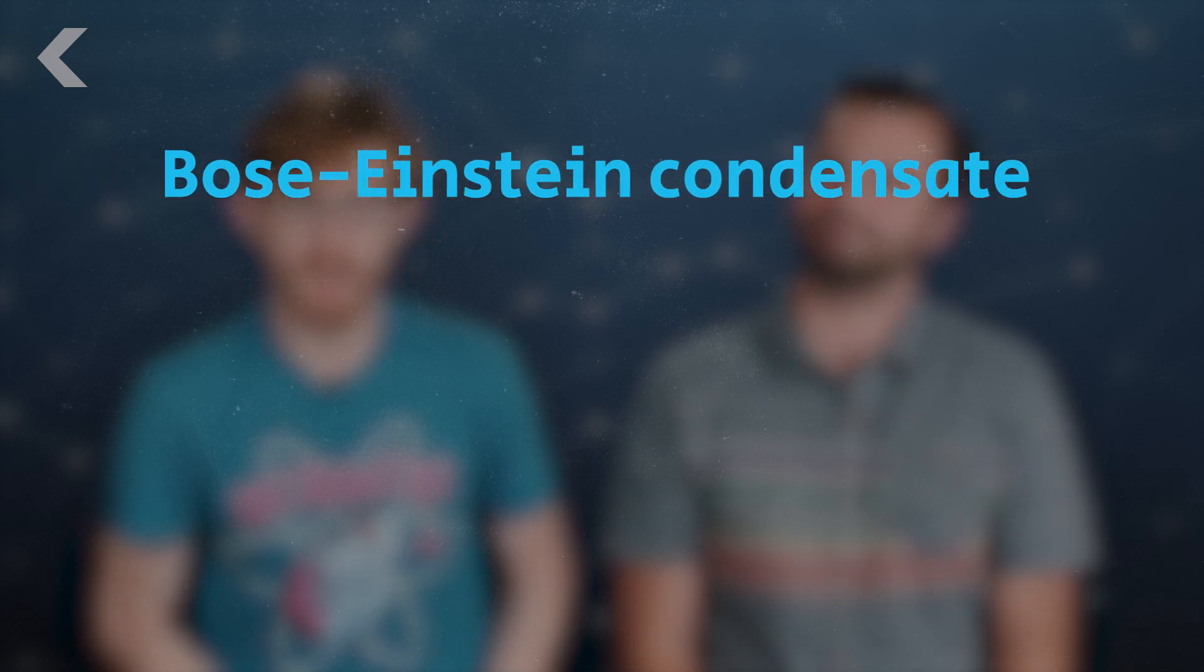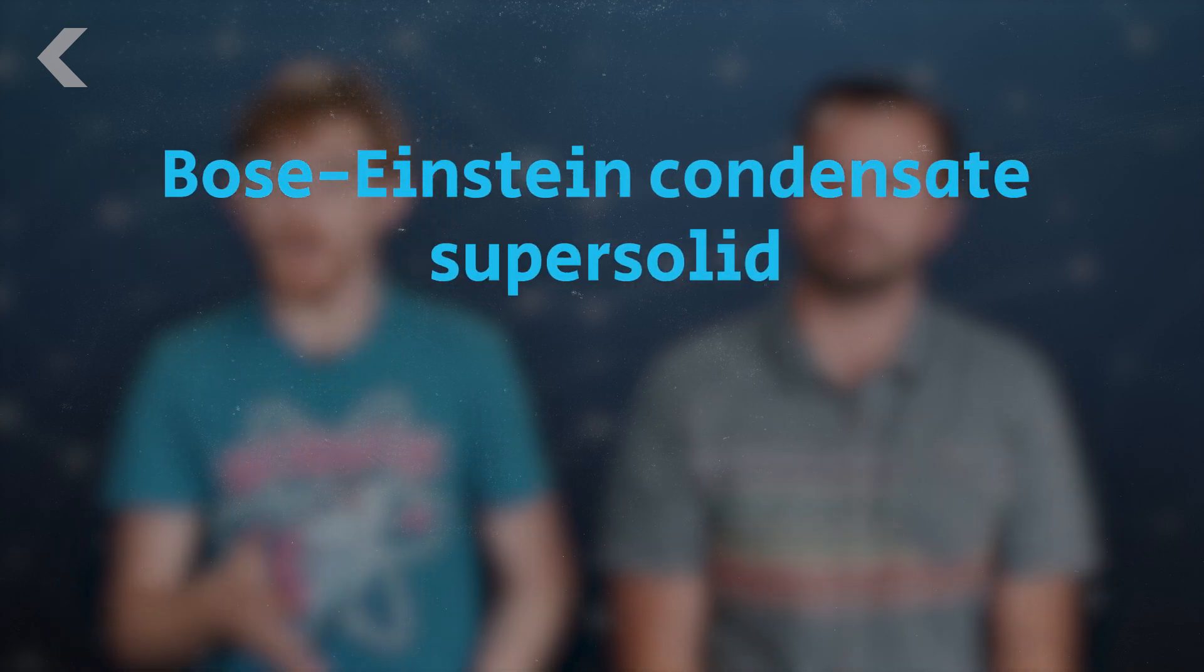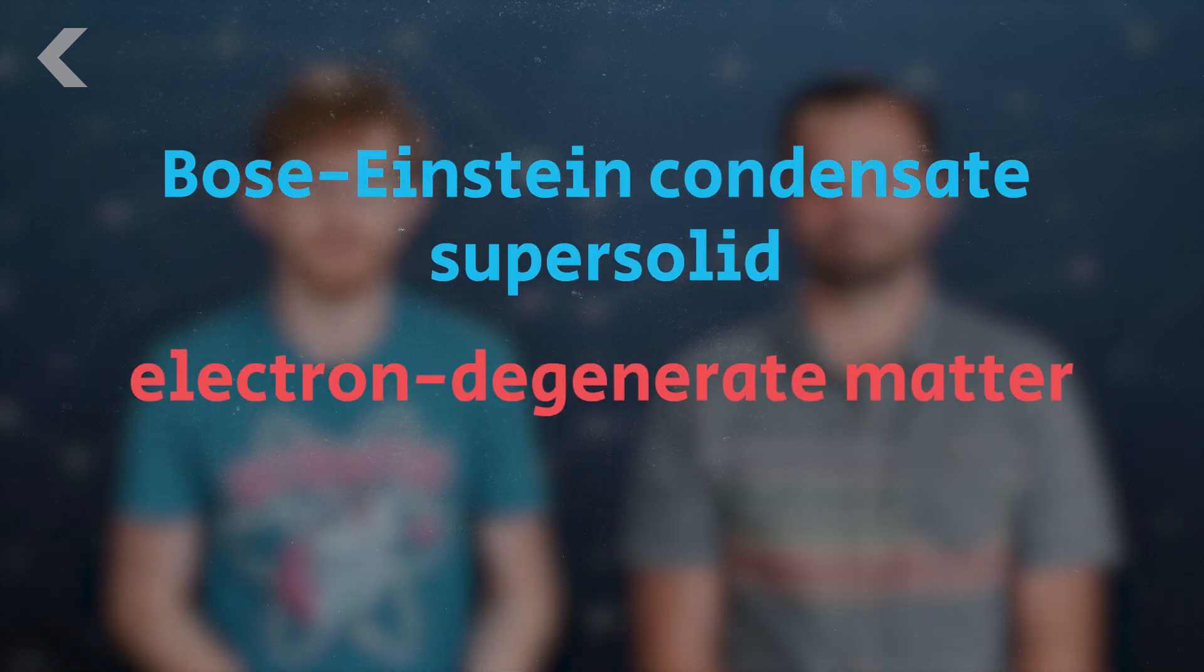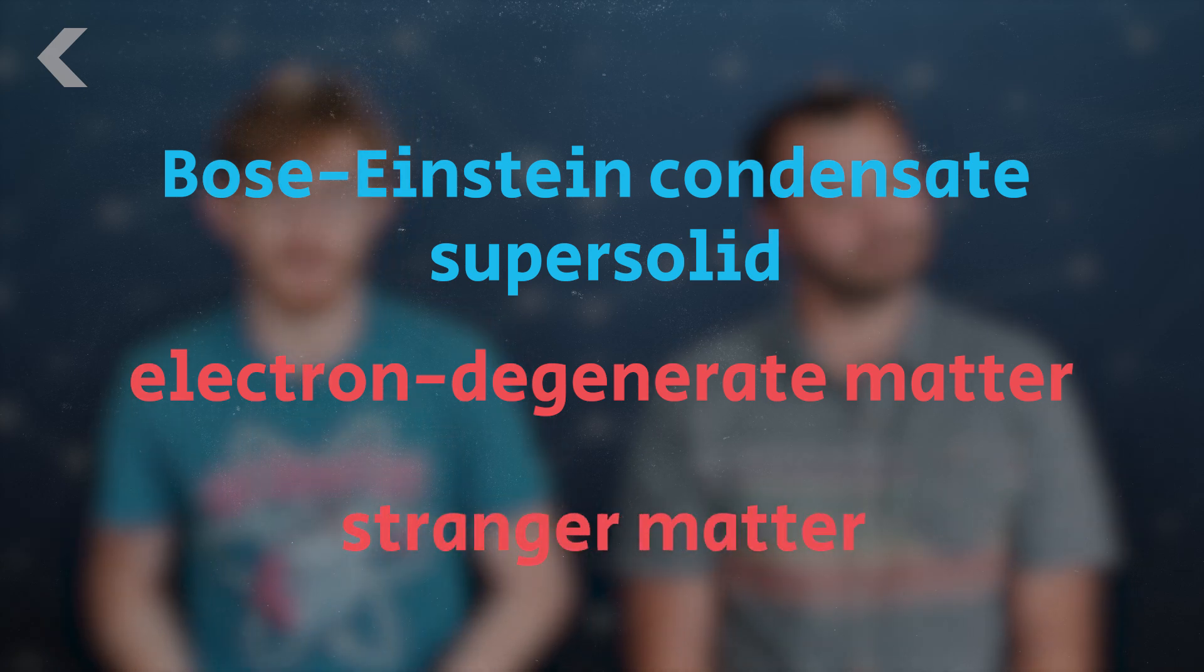But on top of those four, there are several more states of matter. Cold ones like the Bose-Einstein condensate and super solid, and hot ones like electron degenerate matter, free particles found in white dwarf stars, or the theorized stranger matter possibly found in neutron stars. Plus, of course, time crystals, which have low energy states and weird effects across time symmetry.